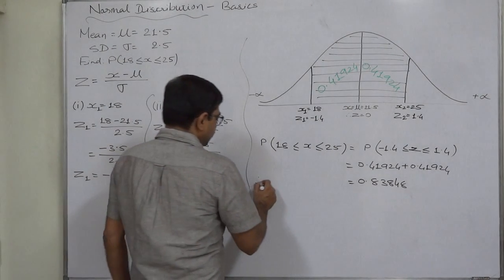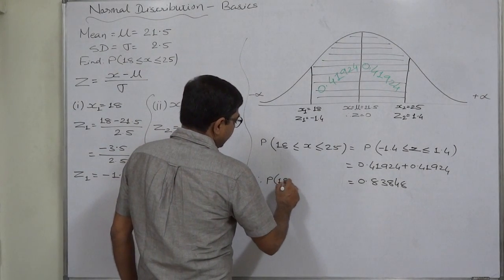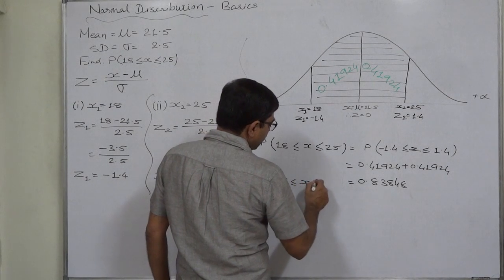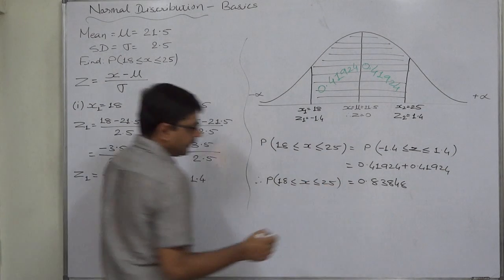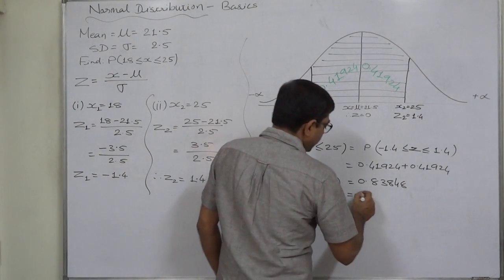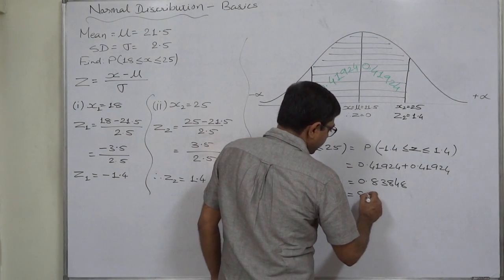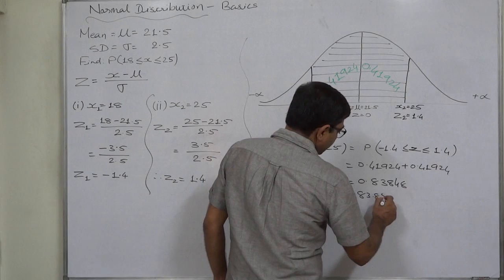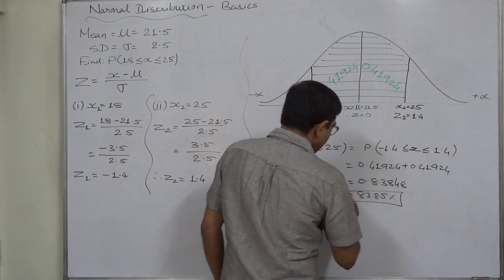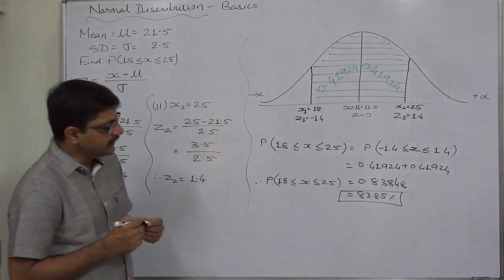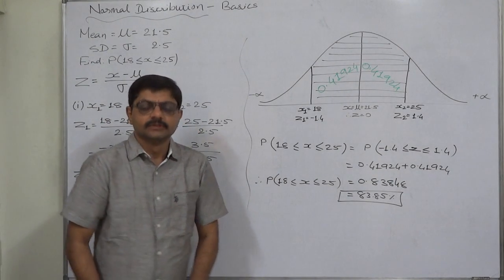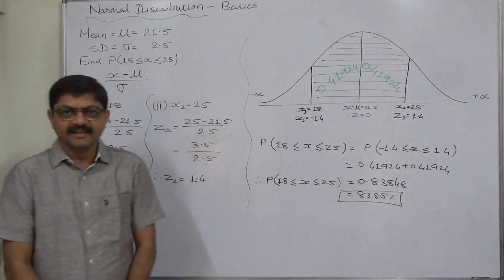So this is the probability that the variable x takes a value between 18 and 25 if it follows a normal distribution. We can also express the probability as a percentage by multiplying by 100. Thank you very much.